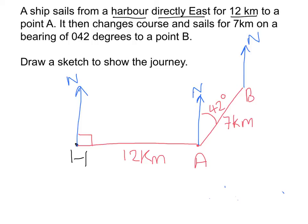For example, extending the north line down from H and down from A, you can see there's a Z shape between those two north lines. If the angle at A is 42 degrees, then the corresponding angle in the Z shape at H must also be 42 degrees. That can be very helpful if you have to work out bearings back the other way.